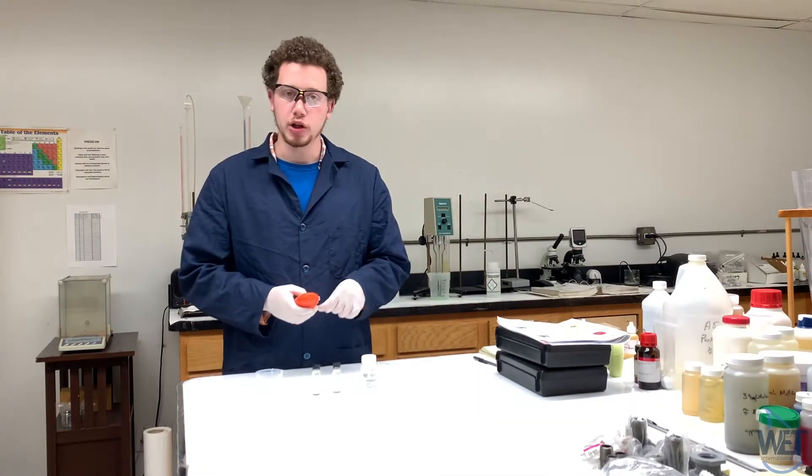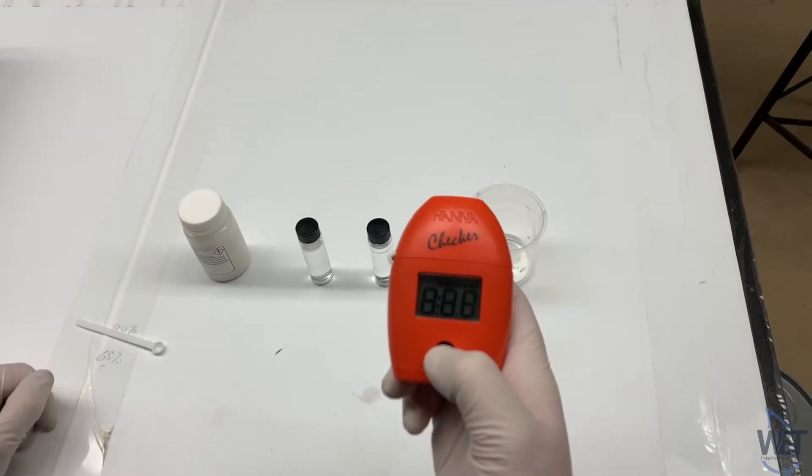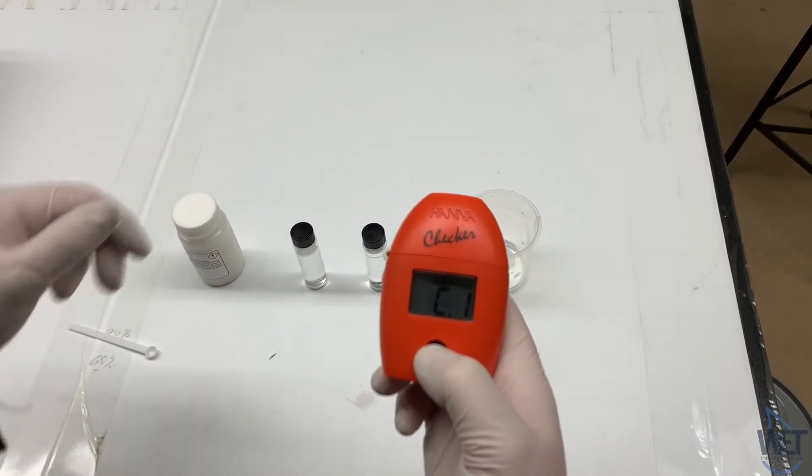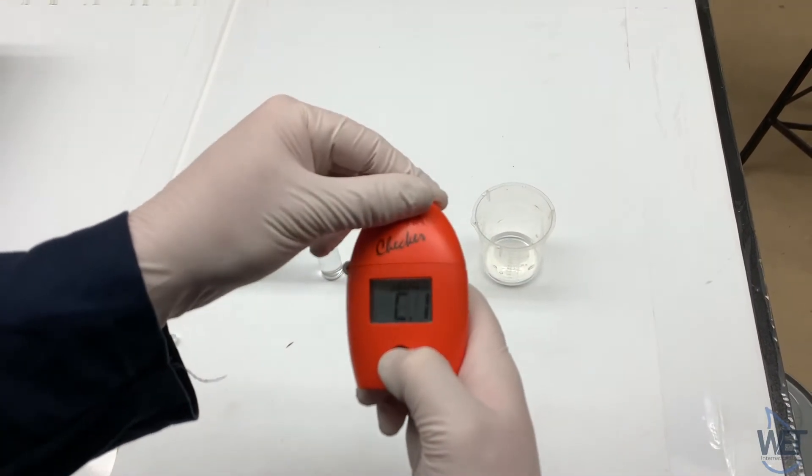After the three minutes are up, you can turn on your colorimeter by pressing the black button. When C1 comes up on the screen, you can insert your blank and press the black button.